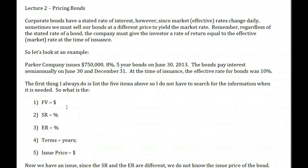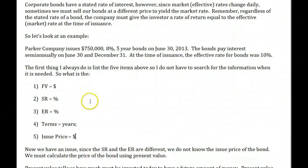Regardless of the stated rate of the bond, the company must give the investor the rate of return equal to the effective or the current market rate at the time of issuance. In other words, if our bond only pays a 7% rate but the market is 8%, they're going to take their money to a place where they're going to get the 8% return. They're not going to accept a 7% return when the market yields 8%.